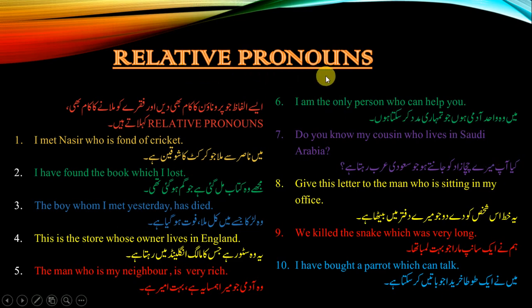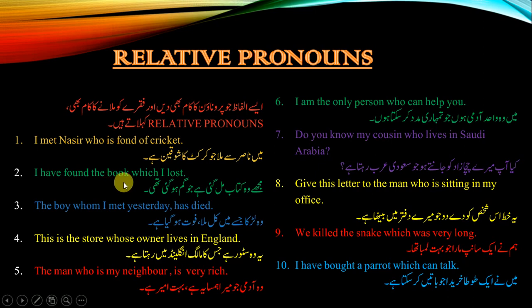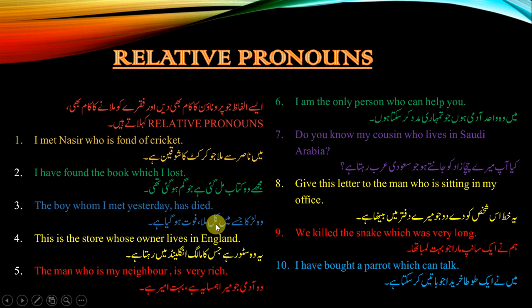Now we'll discuss about the relative pronouns. See the examples. I met Nassir who is fond of cricket. I have found the books which I lost. مجھے وہ کتاب مل گئی ہے جو گم ہوگئی تھی۔ The boy whom I met yesterday has died. وہ لڑکا جسے میں کل ملا فوت ہو گیا ہے۔ This is the store whose owner lives in England. یہ وہ store ہے جس کا مالک انگلینڈ میں رہتا ہے۔ The man who is my neighbour is very rich. وہ آدمی جو میرا ہمسایہ ہے بہت امیر ہے۔